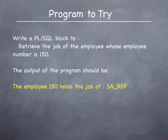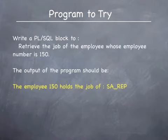Here is a program for you to try based on the HR schema's employee table. It might be a good idea for you to pause the video for a few minutes and attempt this program. The best way to learn programming is to actually write programs. In this program you want to retrieve the job of the employee whose employee number is 150. After retrieving the job, display the job along with the string 'The employee 150 holds the job of:' followed by the job retrieved from the table. The solution to this program is at the end of the video.